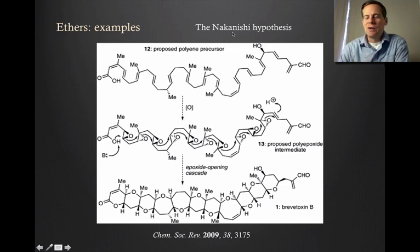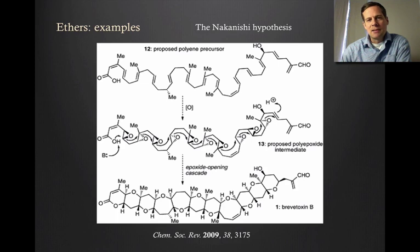What he proposed was that these ladder polyethers are formed by first, the organism builds up a long chain of many alkenes, such as this molecule here. Then through a series of enzymes, most of those alkenes will be epoxidized to lead you to this polyepoxide type of material. Then in the key step, the idea is that this carboxylate gets deprotonated by some base, probably a group in an enzyme. That carboxylate will attack the first epoxide. And then that resulting alkoxide will attack another epoxide and so on and so forth all down the chain until you've built up this polyether.